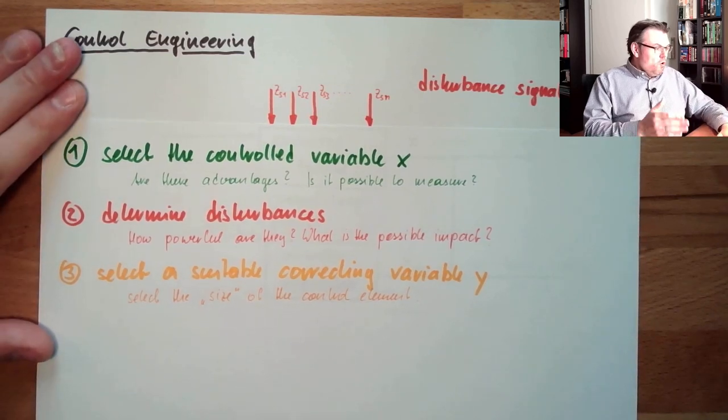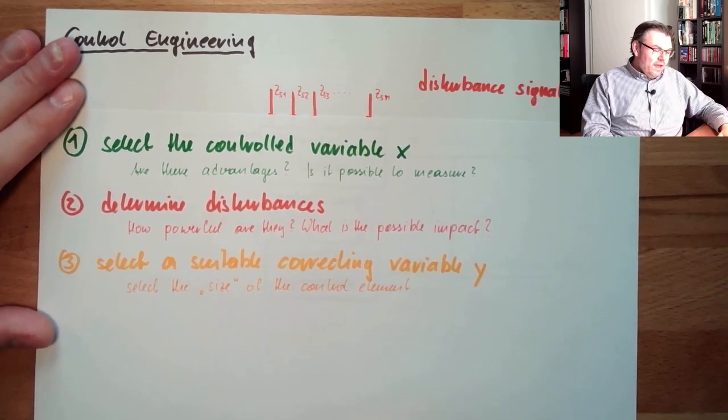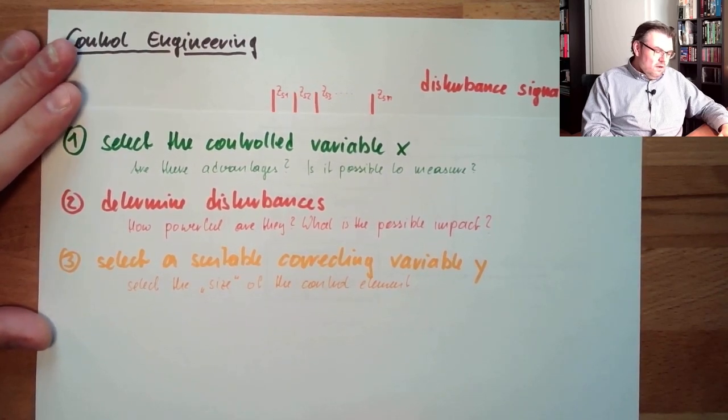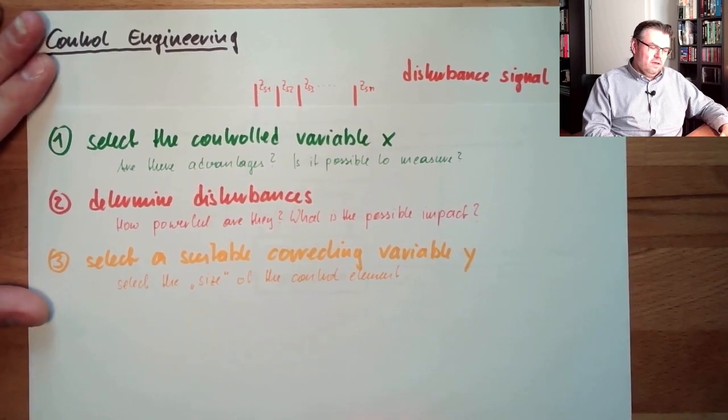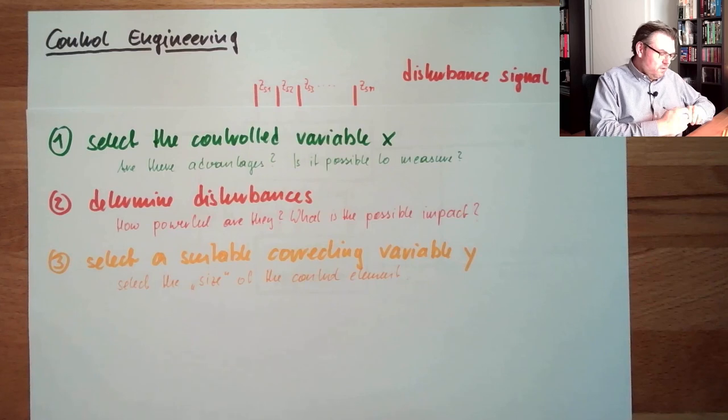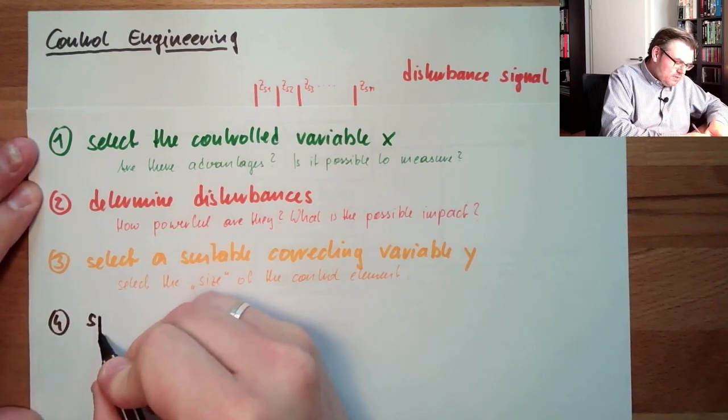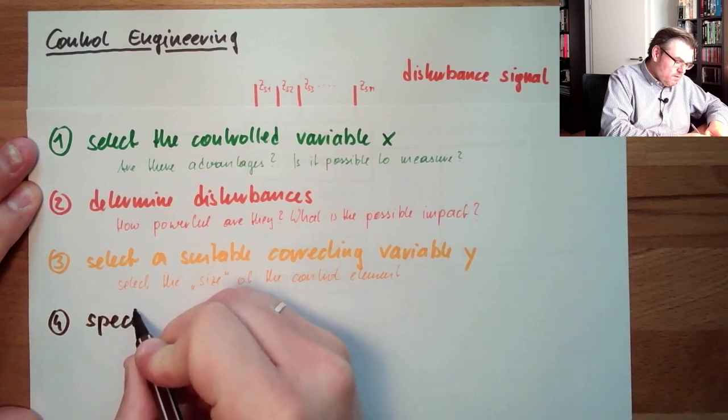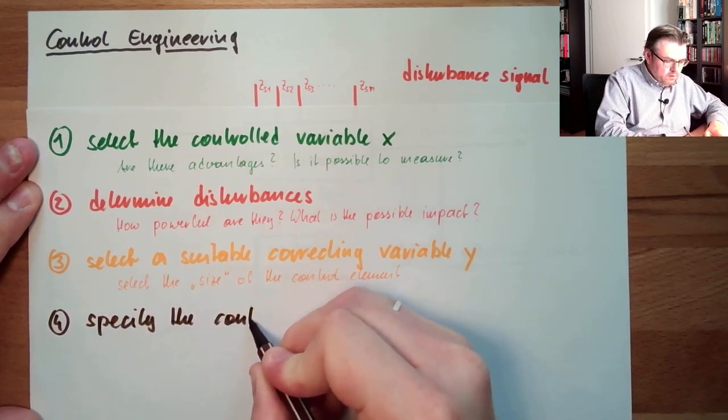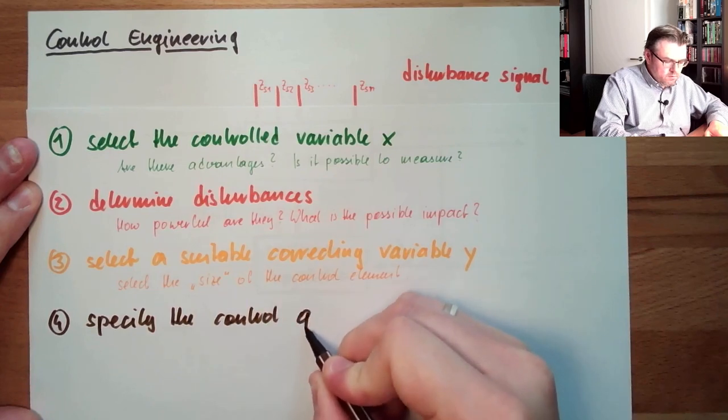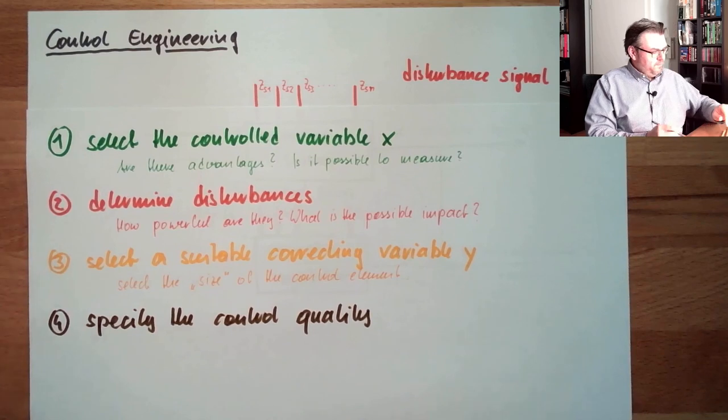If I did not first determine the possible disturbances and their impact, their potential impact, I can never select the correct size of my control element. How much influence I have to spend into the control variable to be able to reach the disturbances will not affect. So now, what is now the next thing? The next thing would then be I have to specify the quality I want to reach. So the fourth thing is specify the control quality. What does this mean?